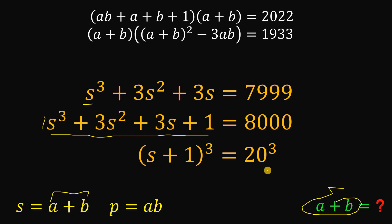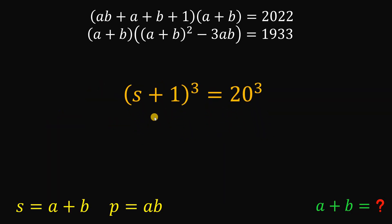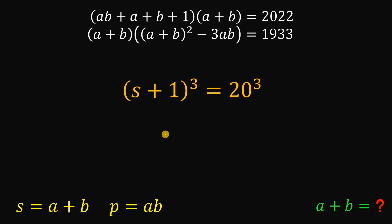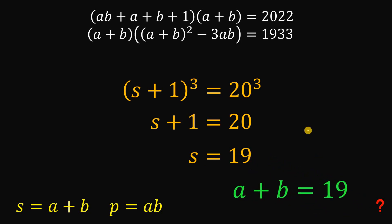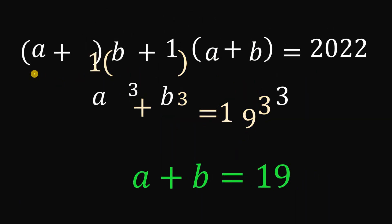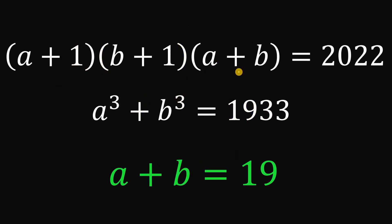To find the value of s, we take the cube root of both sides of (s+1)³ = 8000, giving s+1 = 20. Subtracting 1 from both sides, s = 19. Since s = a+b, the answer to the question — given (a+1)(b+1)(a+b) = 2022 and a³+b³ = 1933 — is that a+b = 19. And as always, we are done.